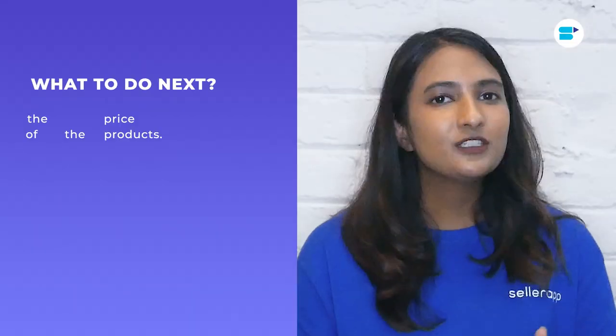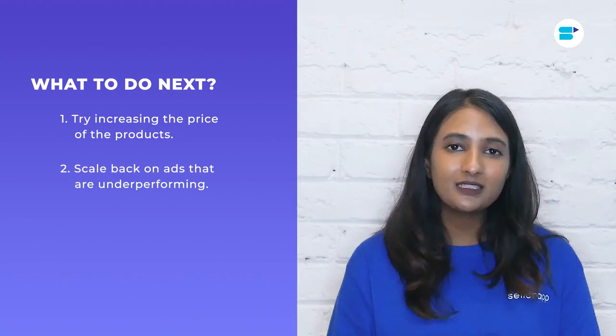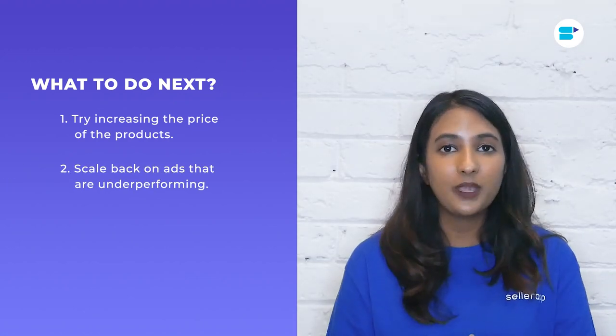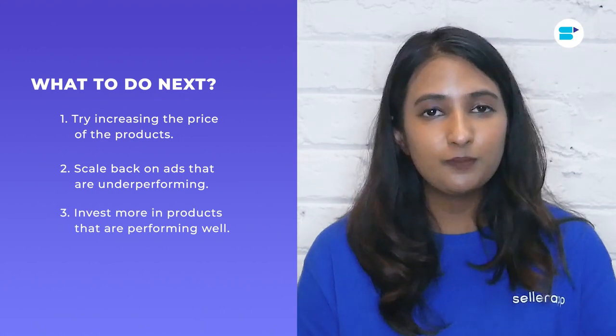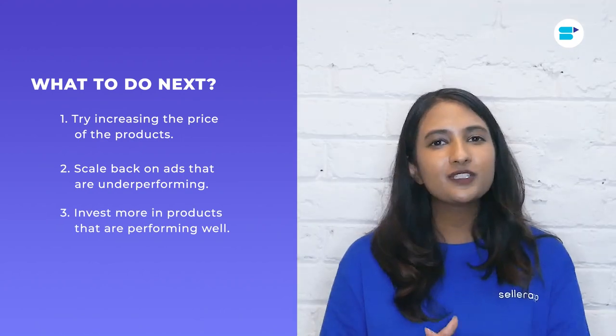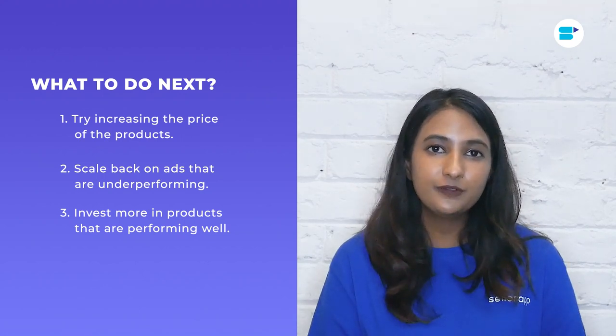Once you've analyzed your products and their PPC campaigns using Seller App's Product Analysis feature, here are some things you can do immediately: first, try increasing the price of the product; second, scale back on ads which are underperforming; third, invest more in the products that are doing well. There are a lot of exciting features within Advertising that you can explore.